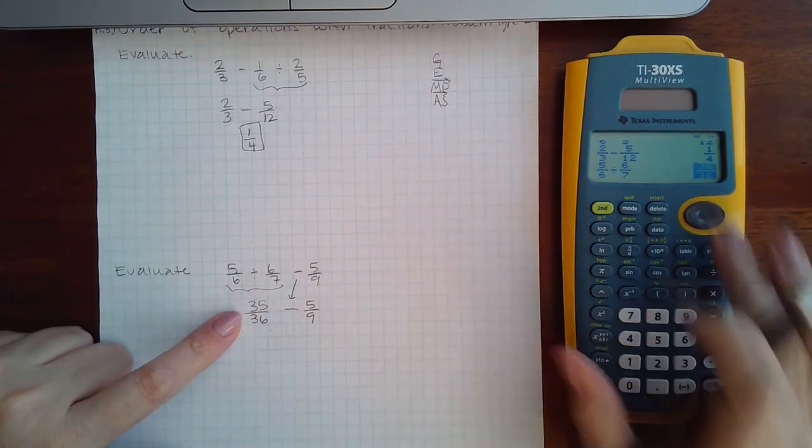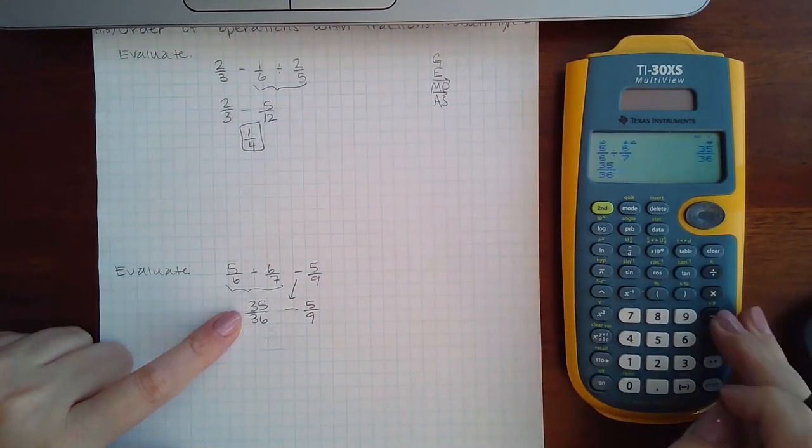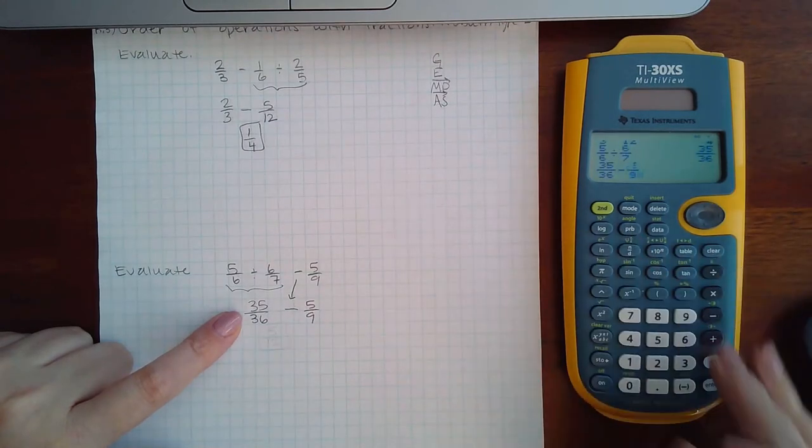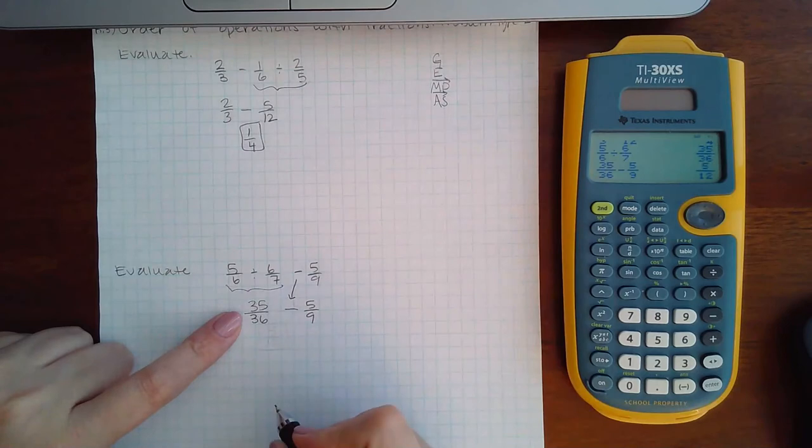Bringing down my minus and my five ninths. And so then I'm going to copy that fraction and do minus five over nine, and I get five over twelve.